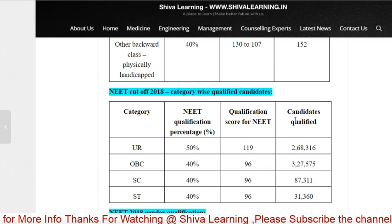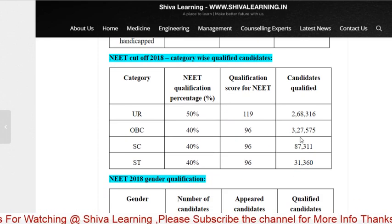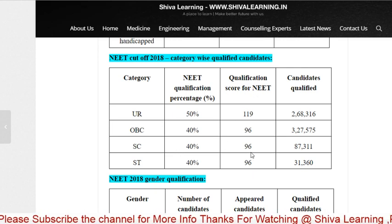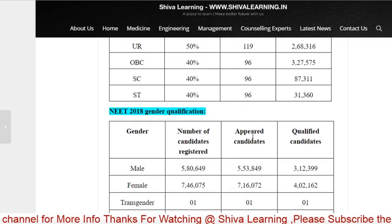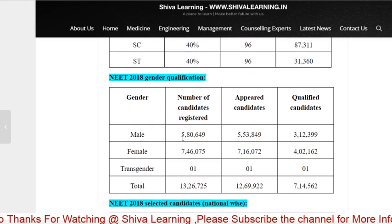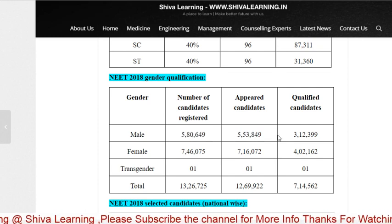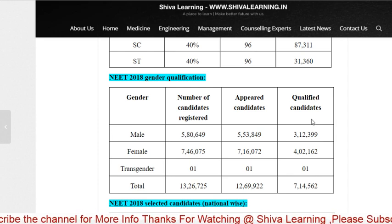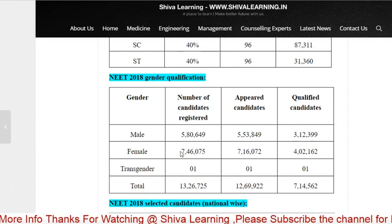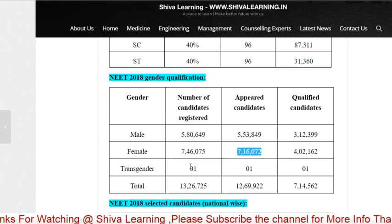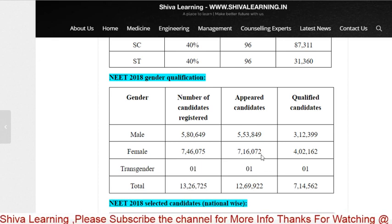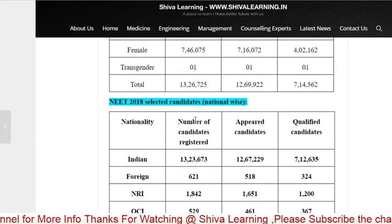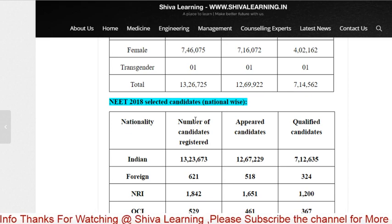The NEET cutoff for 2018: the 15% cutoff was 119 marks, with a certain number of candidates qualifying. The SC cutoff was 96 marks, and 87 for another category. Looking at gender breakdown for 2018: the number of male candidates registered, appeared, and qualified are shown separately. You can also see female and transgender data, and the overall total for 2018.